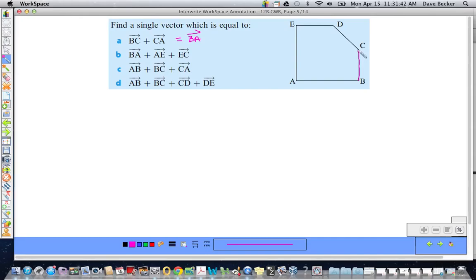So, BC to CA. We're just adding vectors here. So, I go from the start of BC to the end of CA. And there I get the vector BA.